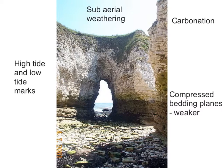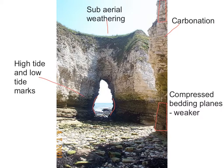This photograph of an arch is at Flamborough Head along the North Yorkshire coastline. Not only is there sub-aerial weathering and biological weathering at the roof of the arch, but because you can see some white, you can assume it's chalk or limestone, so there will also be some carbonation going on. Looking closely at the bottom of the photograph, the bedding planes — the horizontal lines — are much closer together compared to those at the top. This is due to the pressure and weight of the cliffs bearing down at the bottom, causing more cracks, making the bedding planes weaker and more likely to be subject to erosion and weathering, which partly explains the well-formed wave cut notch there between the high and low tide marks.